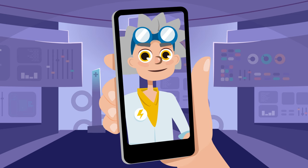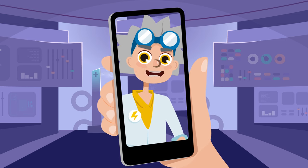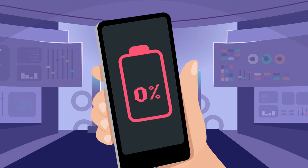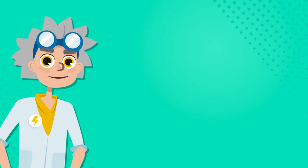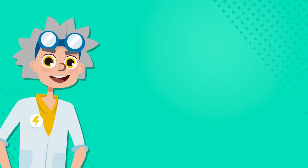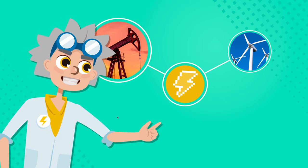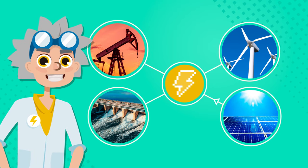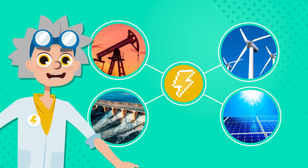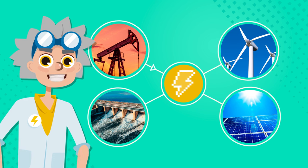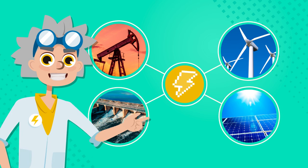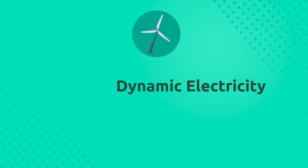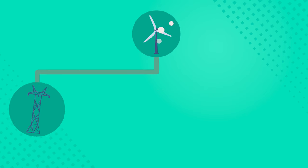Static electricity only lasts a short time, so obviously we can't use it to charge our cell phones or turn on a lamp. We need to obtain a different type of electricity using the natural resources around us, as I explained in our last video. The electricity we receive at home to run our electronic devices is called dynamic electricity.